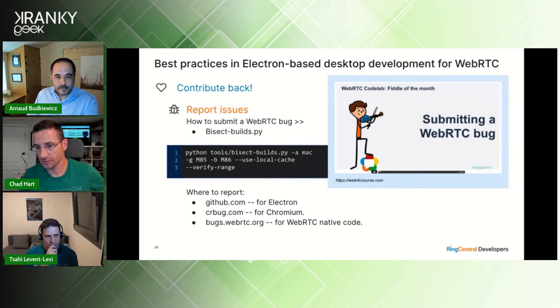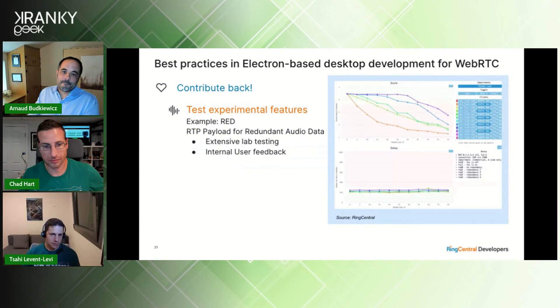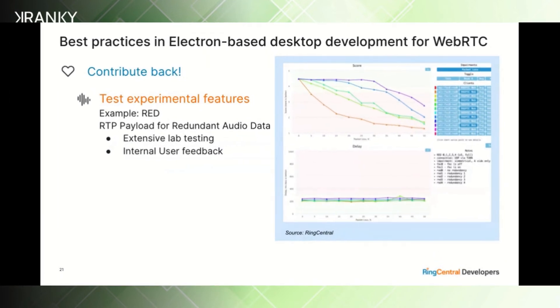Also contribute by testing experimental features. One example from RingCentral is RED — an IETF RFC that describes an audio packet duplication mechanism to fight against packet loss. With RTC support and Philip Hanker's contribution, we performed extensive lab testing and shared our internal user feedback. RED is now GA in Chrome 96.